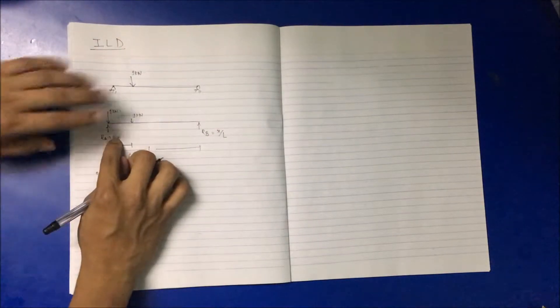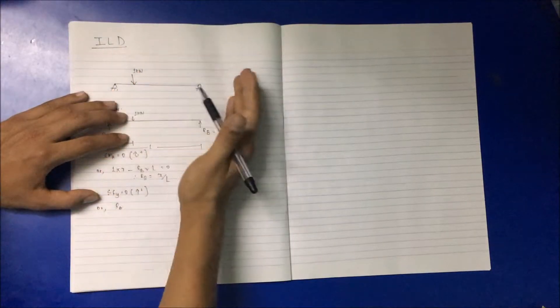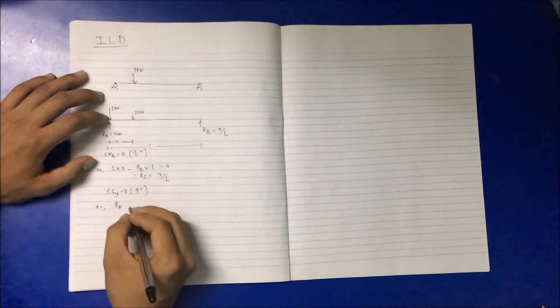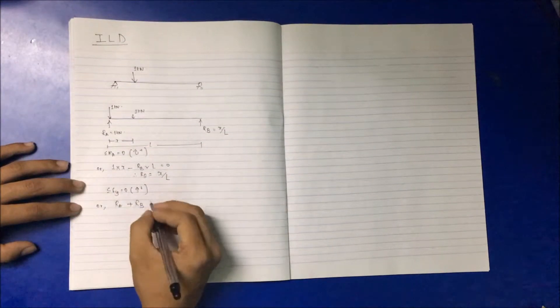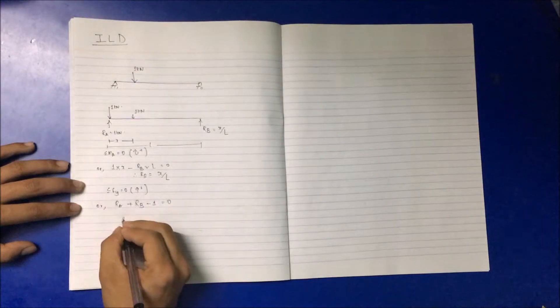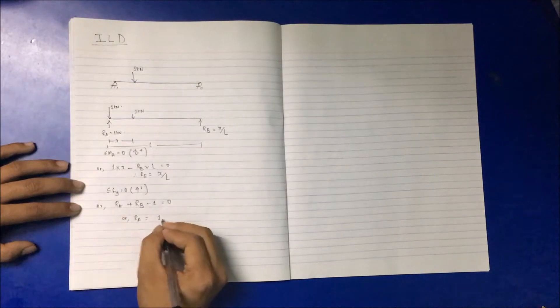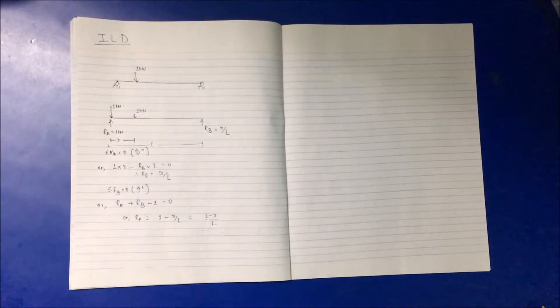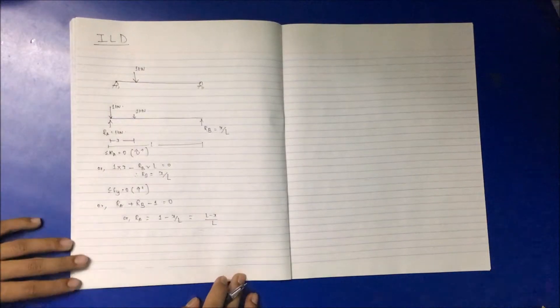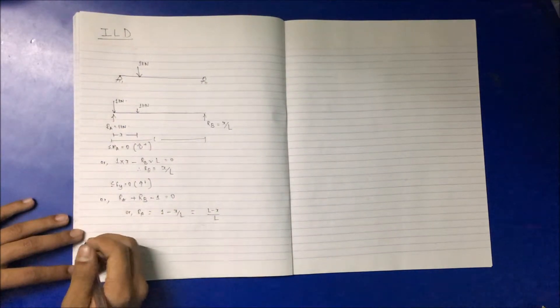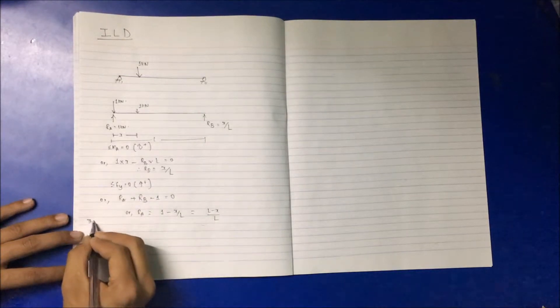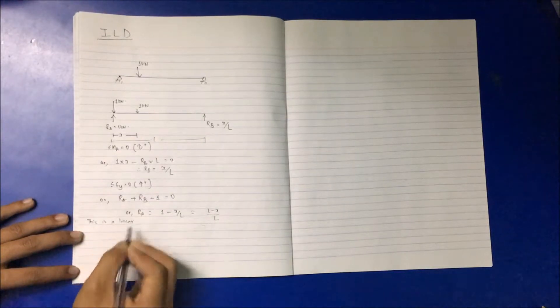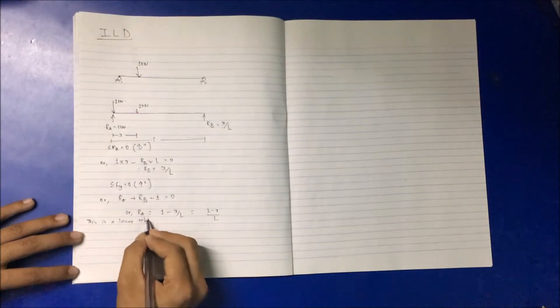Note: the value 1 was only a consideration for the unit load. Now for 1 kilonewton acting at distance X, RA acting vertically upward is positive. So RA plus RB minus 1 equals zero. With RB equal to X by L, we get RA equal to (L minus X) by L. This is a linear relation for RA and RB.